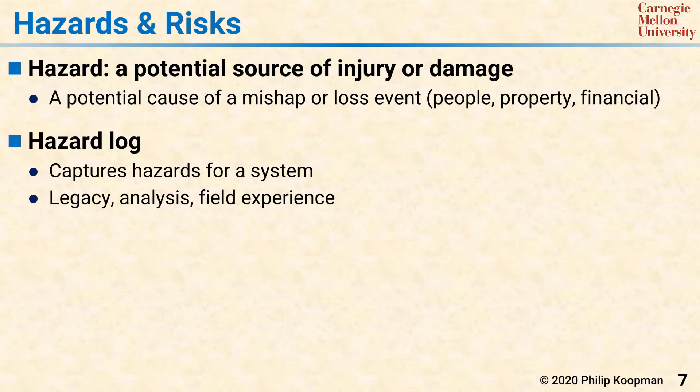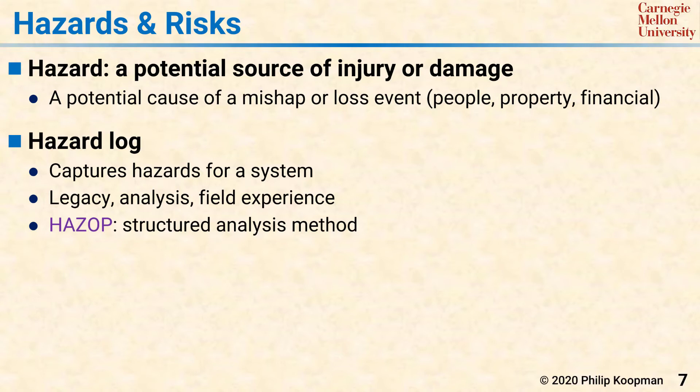Analysis is often performed by a method called HAZOP. A HAZOP works by applying modifiers to system requirements. For example, if there is a requirement for speed, a HAZOP would modify the wording of that requirement with keywords such as 'too fast' or 'too slow' to help in brainstorming what might happen if the system was faster or slower than the required speed.